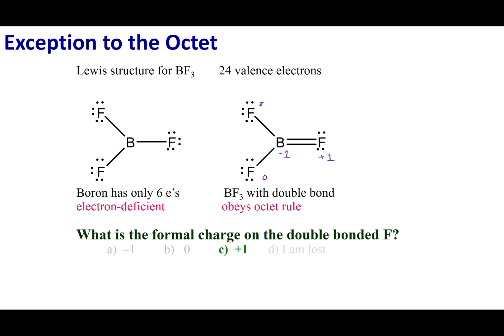If I look at the structure on the left hand side, everything has a formal charge of zero. Here's what we're going to say: there are certain atoms on the periodic table that are allowed to go electron deficient—those are beryllium, boron, and sometimes aluminum.